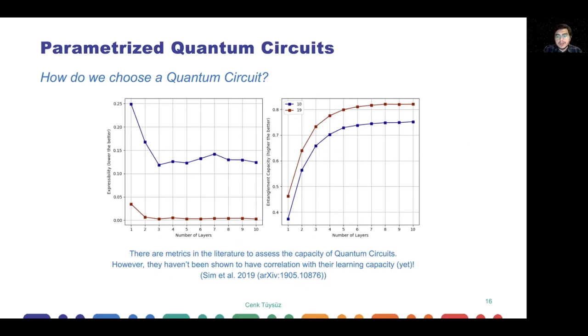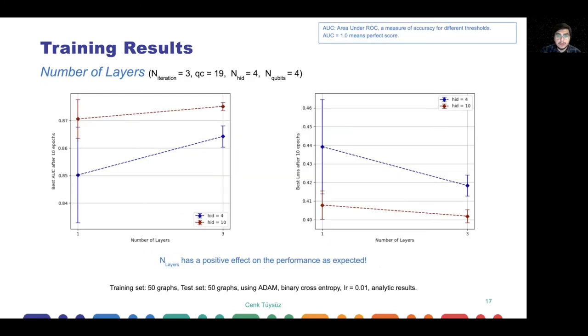Here you see a comparison of these two circuits for expressibility, which gives you an idea of how many locations you can visit on the Hilbert space. Entanglement capacity gives you an idea of how much entanglement you can create. In these instances, you'll see that circuit 19 has better expressibility and entanglement capacity, but we will see that these values being higher doesn't always mean we get a better performance out of the circuits. Coming to the results, you see we used circuit 19 to compare different numbers of layers. Here we experimented with hidden dimension 4 and hidden dimension 10. When we increase number of layers, you see we are getting better accuracies in both cases. This is telling us that our model is working as we expected.